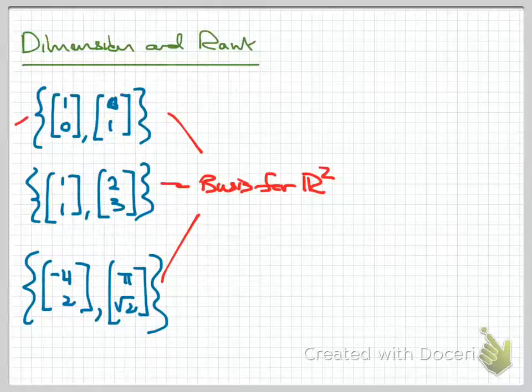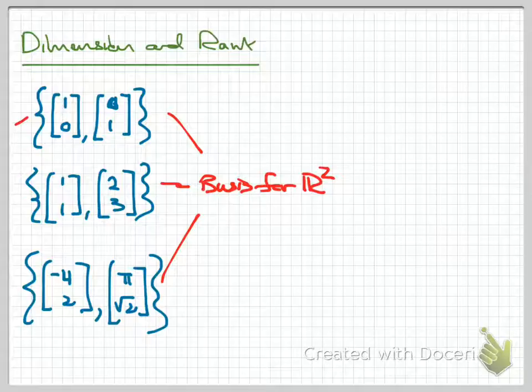The first one is the standard basis for R2; the other two are non-standard. The way to check that these are bases for R2 is to put them into a two-by-two matrix and verify that they reduce to the identity matrix.